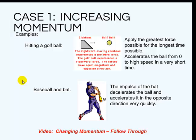Now case one we are going to increase the momentum hitting a golf ball. So the rightward moving club head which is more massive than the golf ball experiences a leftward force and the golf ball experiences a rightward force. The forces have equal magnitude in opposite direction. If you apply the greatest force for the longest period of time and again that's the follow through, then you can accelerate that golf ball from zero on the tee to a very high speed in a relatively short amount of time because of that impulse. That force you are applying with the club head, you extend that for just a little bit more time. It's going to give the ball more momentum and increase its speed.